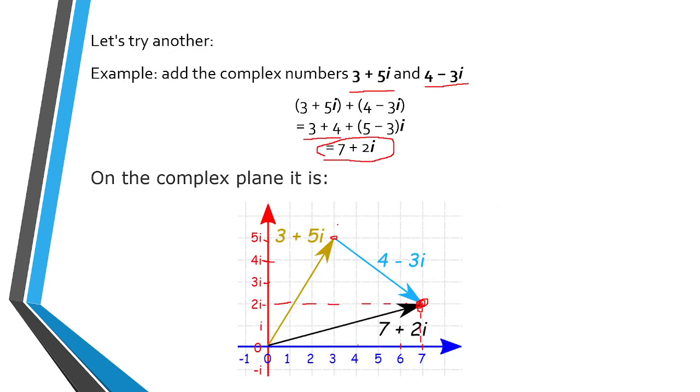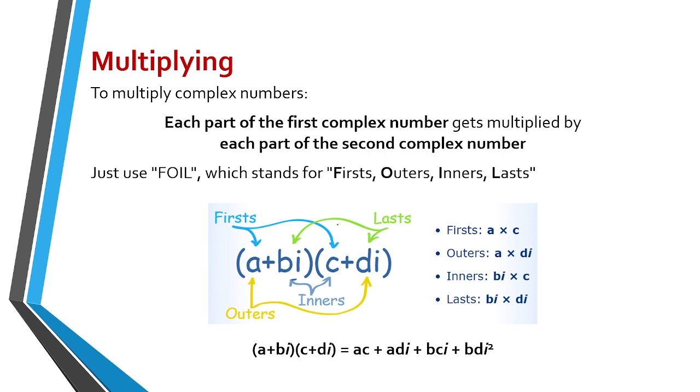In multiplying complex numbers, each part of the first complex number gets multiplied by each part of the second complex number. Just use FOIL, which stands for Firsts, Outers, Inners, and Lasts. So multiply binomials. So first multiply, okay. Then the outers, first are a and c, the outers are a and di. Then next is inners, bi and c. Then last is the lasts, bi and di. So once again, it's like multiplying binomials.